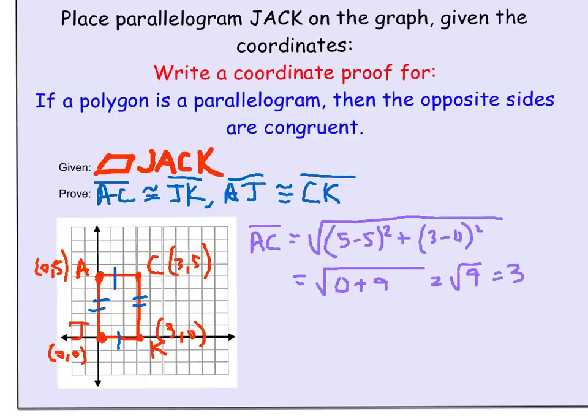But because it's a coordinate proof, you need to back up your answer. That's why we show the distance formula. We can see it's 1, 2, 3 units long, but we use the distance formula to show actual proof that these segments are congruent.